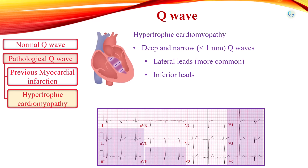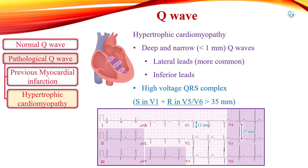Lateral Q-waves are more common than inferior Q-waves, and high-voltage QRS complexes can be observed. Other differential diagnoses of Q-waves include extreme clockwise or counterclockwise rotation of the heart, and lead placement errors — for example, upper limb leads placed on lower limbs.